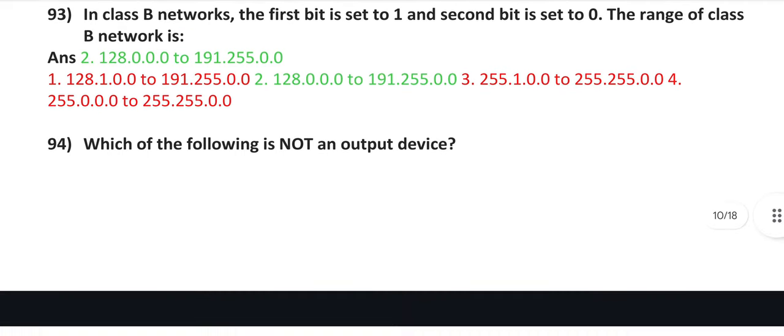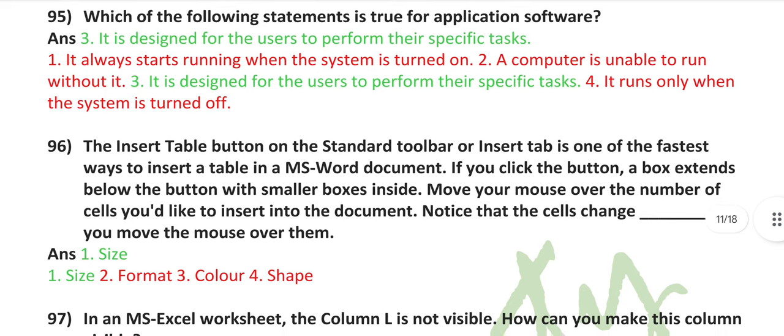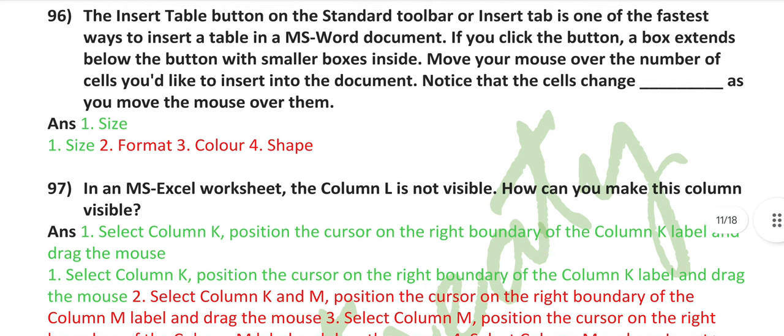In Class B networks, the first bit is set to 1 and the second bit is set to 0. The range of Class B networks is 128.0.0.0 to 191.255.0.0. Which of the following is not an output device? Microphone. Which of the following statements is true for application software? It is designed for the users to perform their specific tasks.